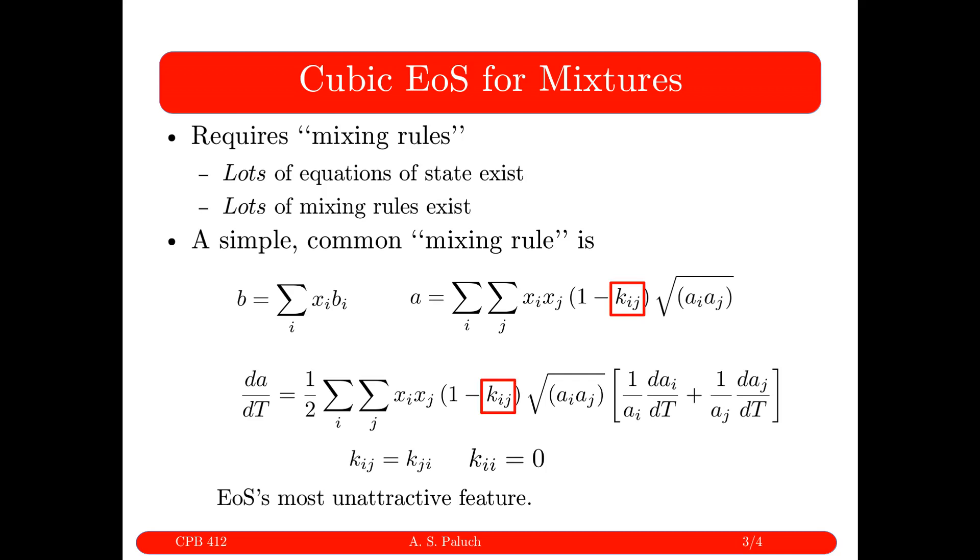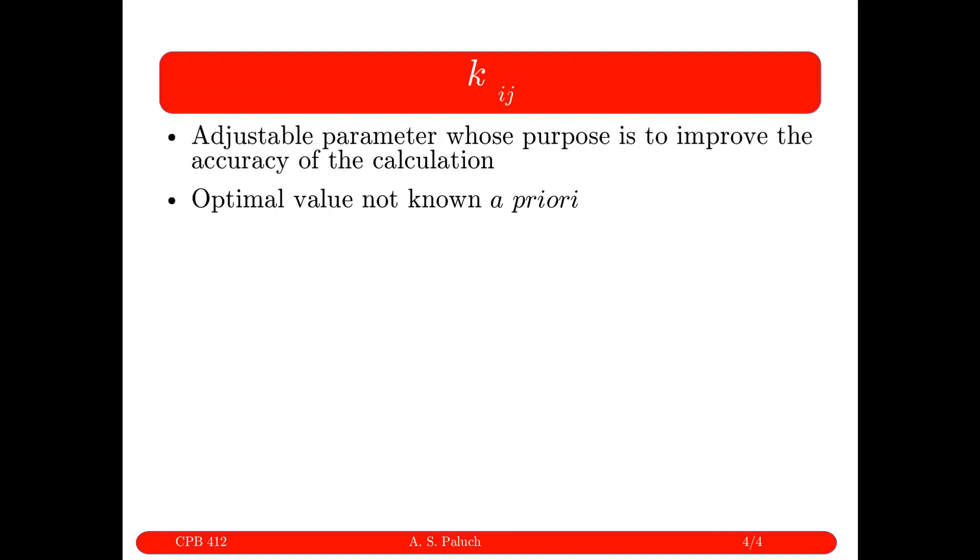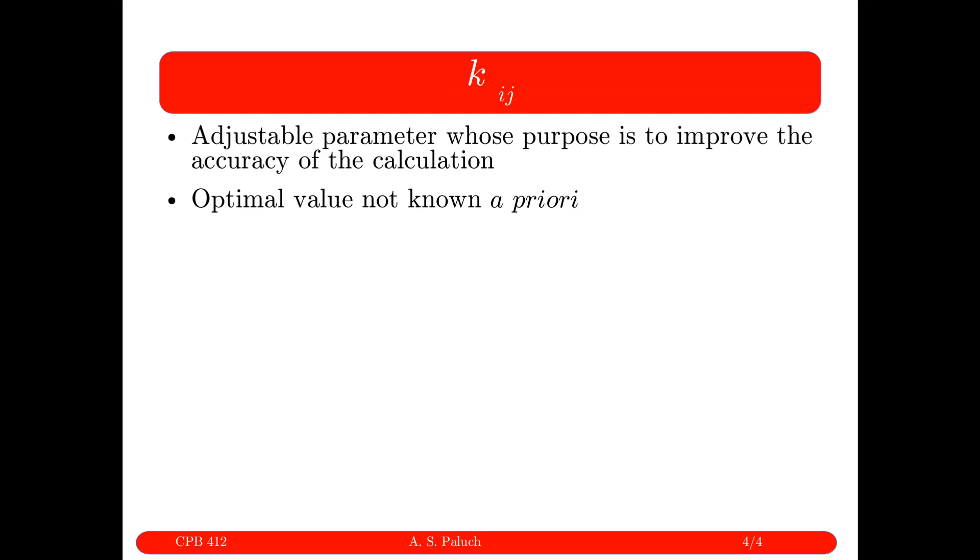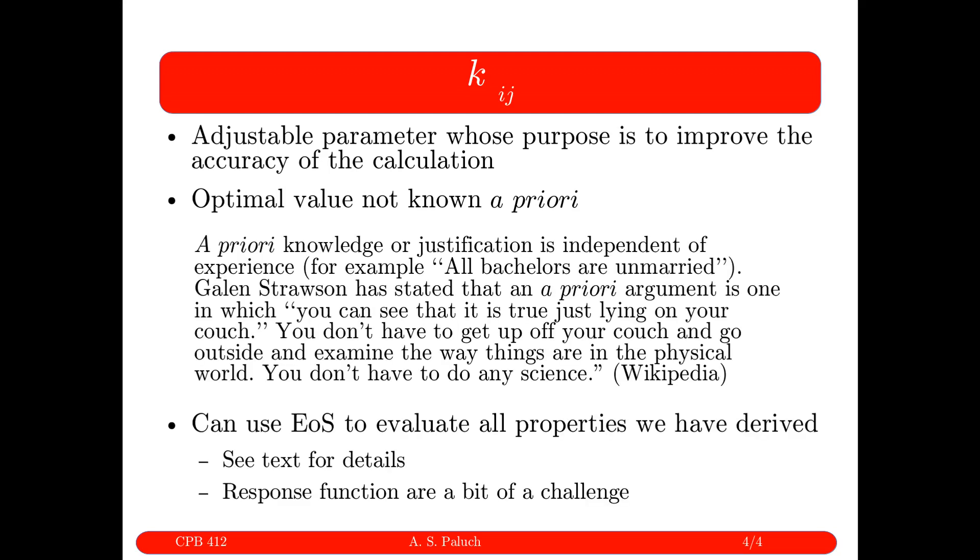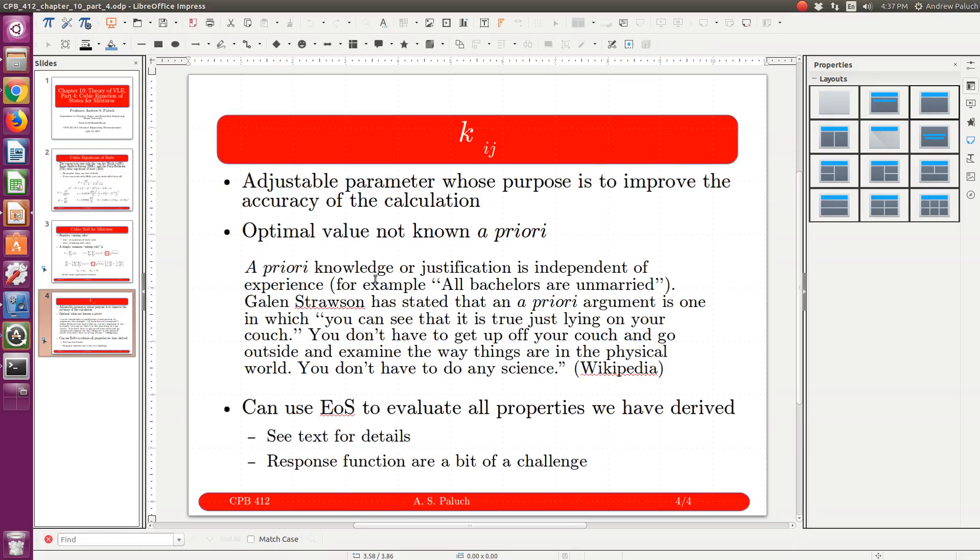This K_ij is the most unattractive feature of cubic equations of state. As I just mentioned, the challenge with K_ij is it's an adjustable parameter and its value is not known a priori. You don't know its value in advance. Normally, it's found by fitting or training on some reference property or some reference set of data. And that's the end of that set of notes.